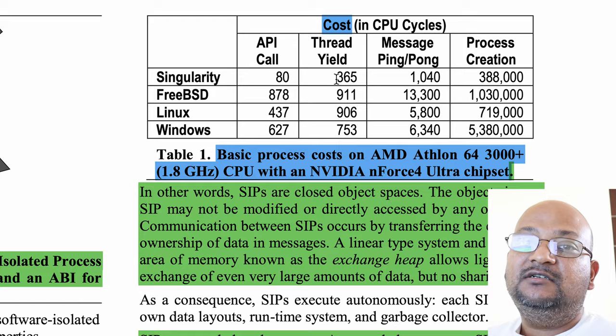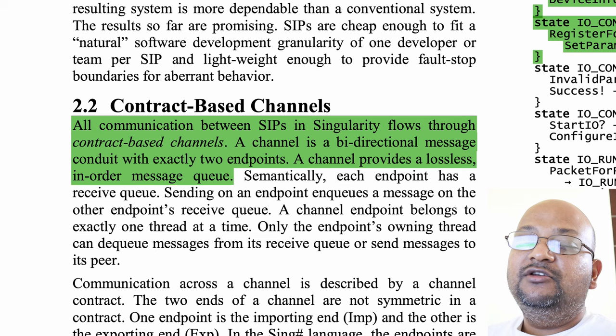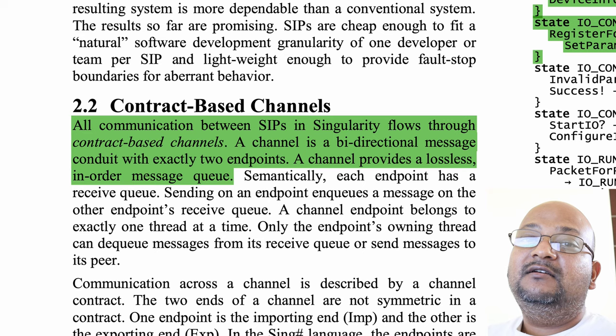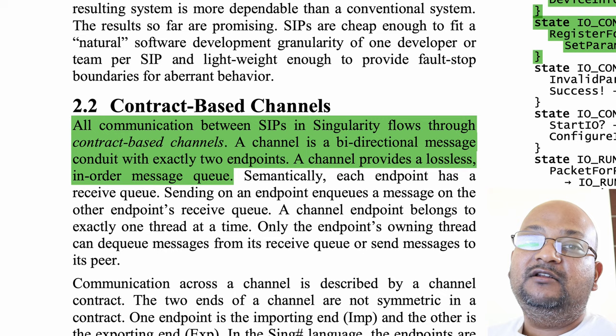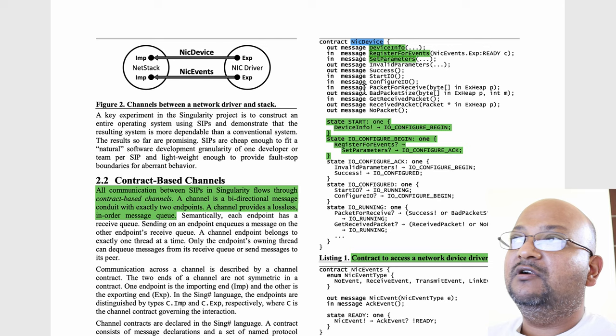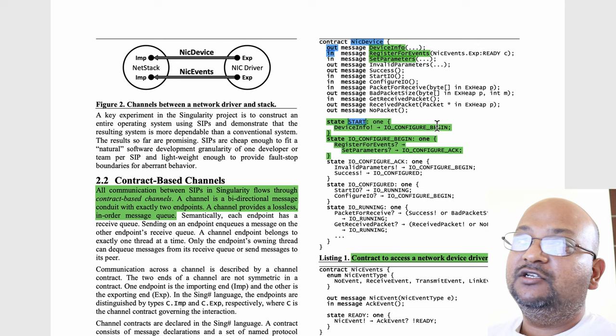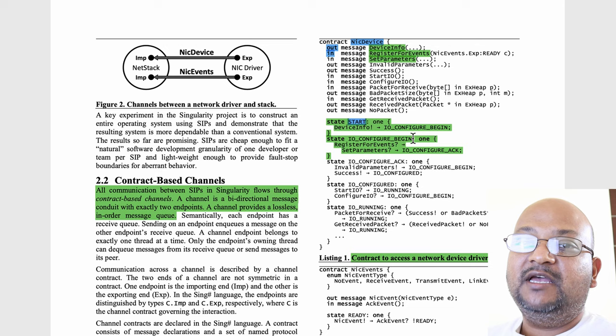Now let's look at the second main design choice in Singularity, which was to use contract-based channels as the only mechanism for processes to interact with each other. A channel is basically a bi-directional pipe via which two processes can communicate with each other, and it is lossless in the sense that your messages will get queued up for the other side to consume. Here's a simple example of the message contract for a network driver — you have various messages that go in or out of this specific driver. In addition to the message signatures, you also specify allowable state transitions, and this is a really powerful mechanism for ensuring correct usage of this message API.